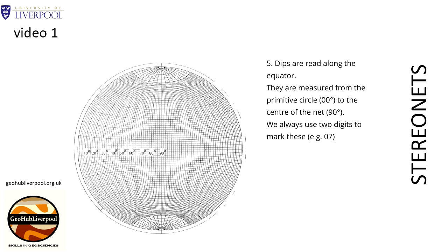Dips are read along the equator. They are measured from the primitive circle to the centre of the net. The divisions from 0 to 90 degrees are marked by the points where the great circles cut the equator.